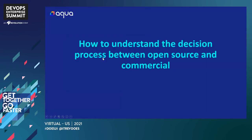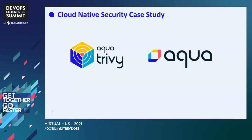We've got two solutions. We have Aqua Trivy, which is a vulnerability scanner that also includes infrastructure as code capabilities. Trivy has more than 3,000 stars on GitHub. It's the most popular cloud native security vulnerability scanner available today on the market. It's used as a default by GitLab, Harbor, and more. So it's a popular open source tool, and more of a DevOps tool.